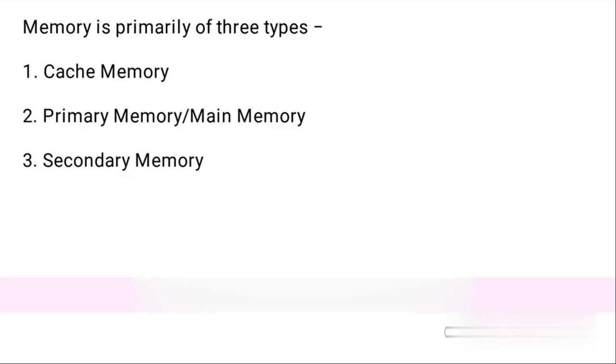Memory is primarily of three types: cache memory, primary memory or main memory, and secondary memory.